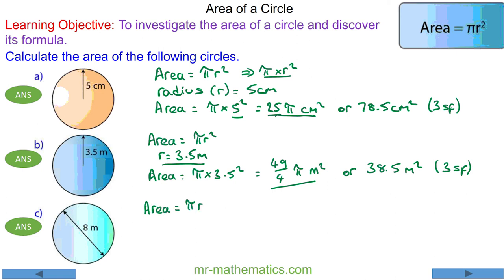So therefore the radius will be 8 divided by 2, which is 4 meters.